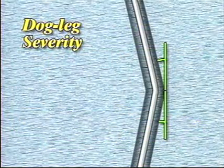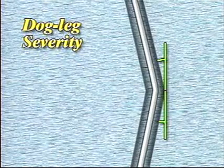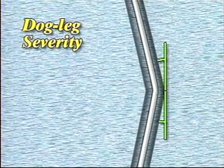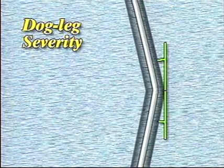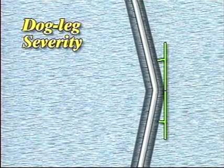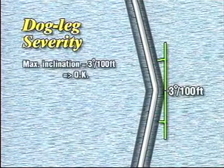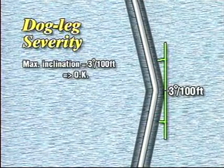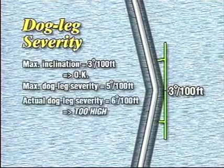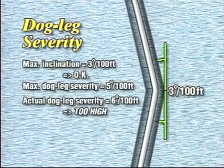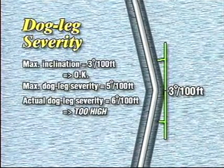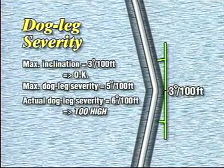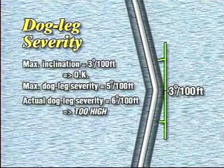Dog leg severity limits are based on drill string operating specs, completion considerations, and other factors. Note that it's possible to run into problems even when the departure from vertical is within an acceptable range. Even though the inclination is within its assigned limit of 3 degrees per 100 feet, the dog leg severity is too high. This illustrates the importance of measuring both inclination and direction, even on vertical wells.